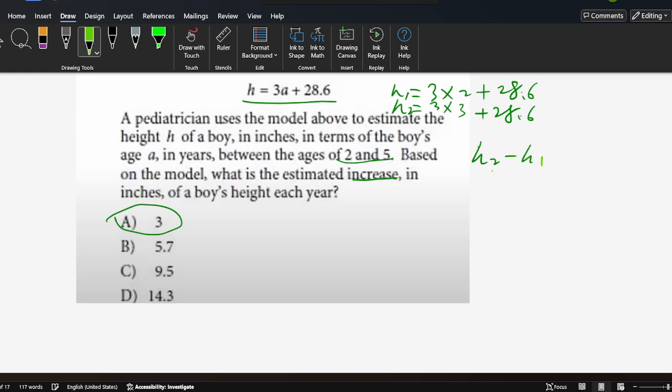So each year of the estimated increase, h2 - h1 equals 3 times 3 plus 28.6 minus 3 times 2 plus 28.6. So 3 times 3 minus 3 times 2. This is the same, cancel. So it's 3. So why this solution is right?